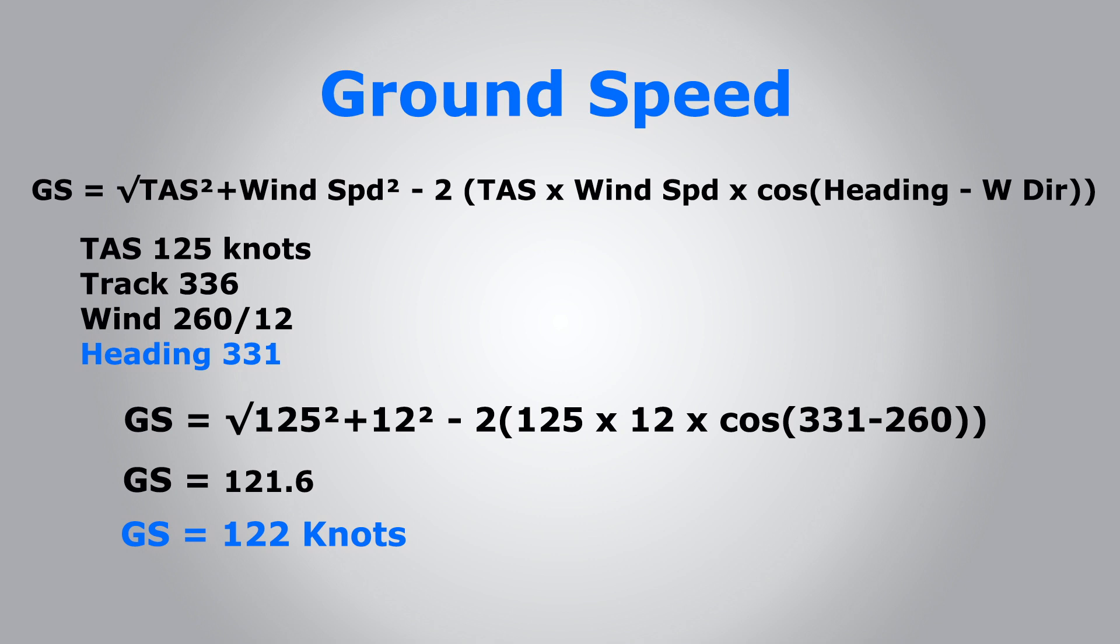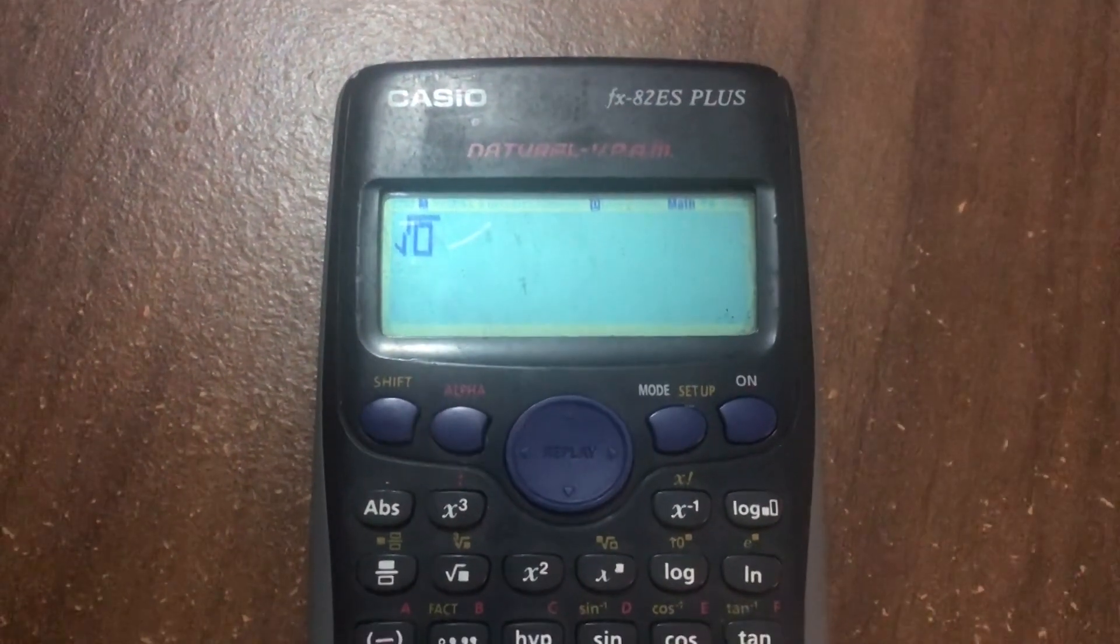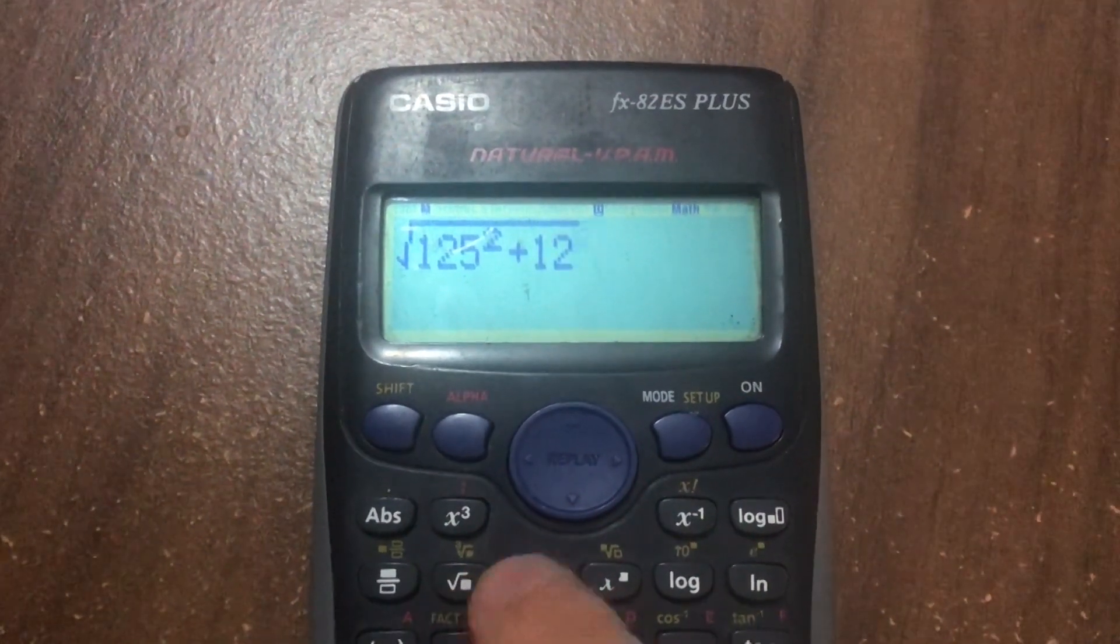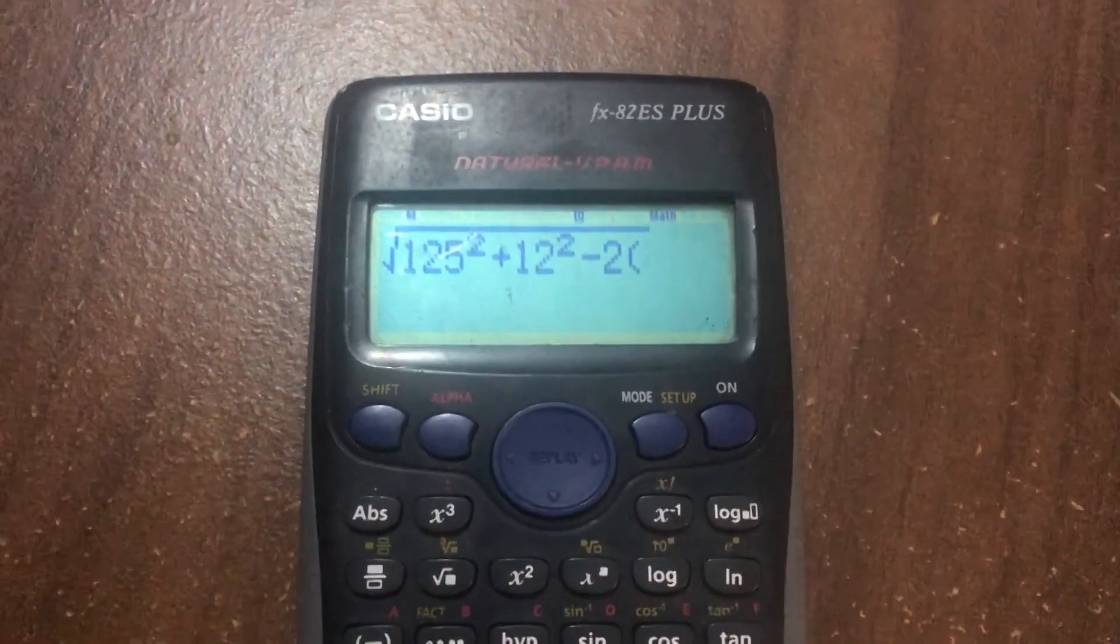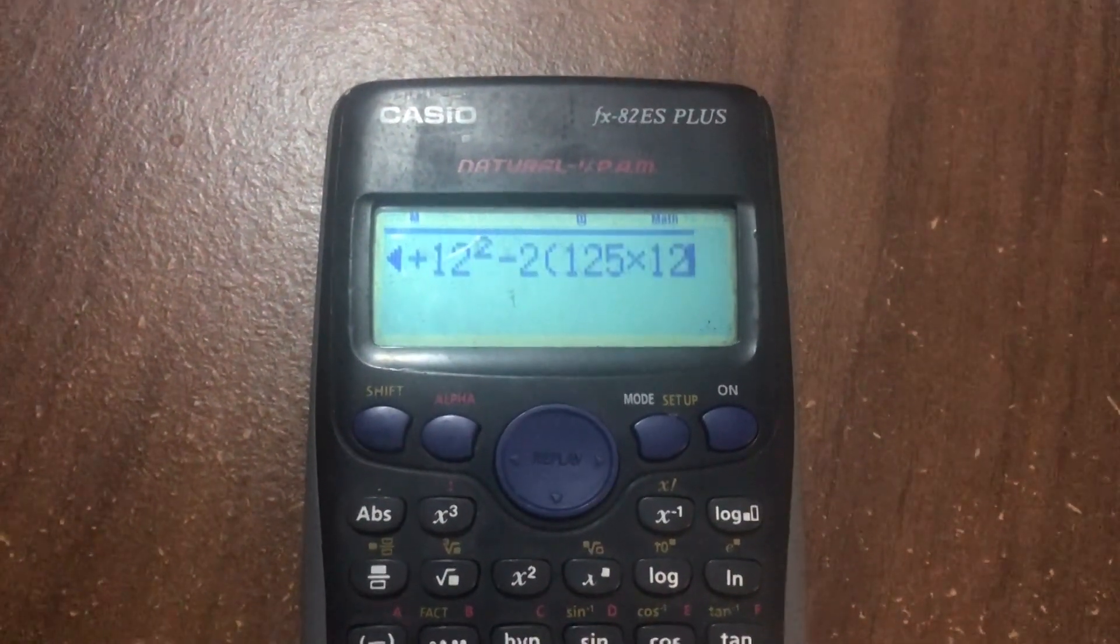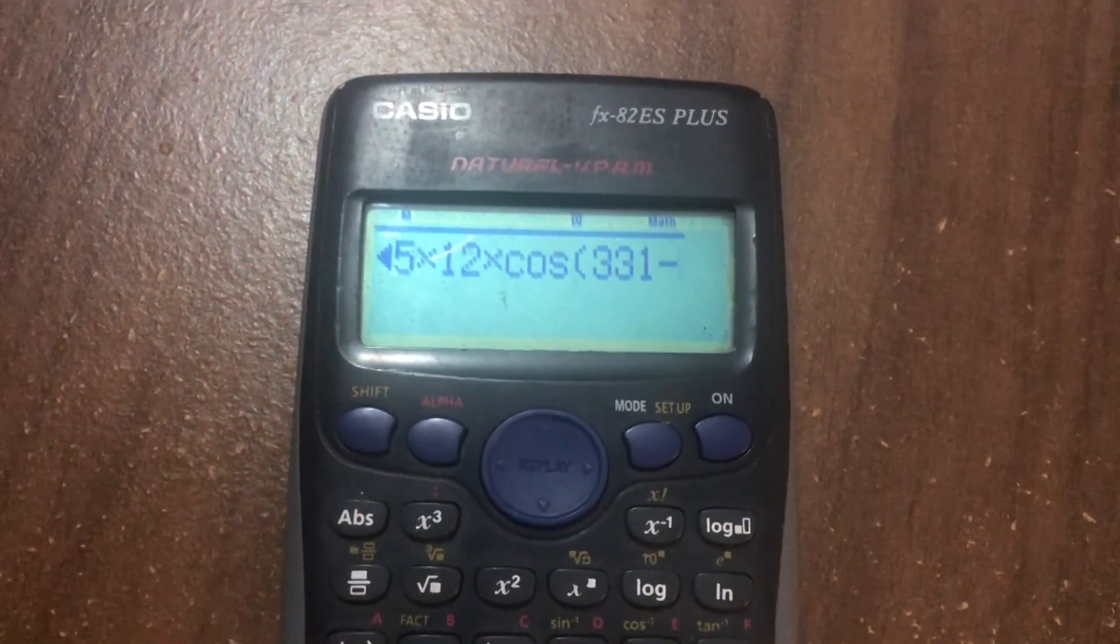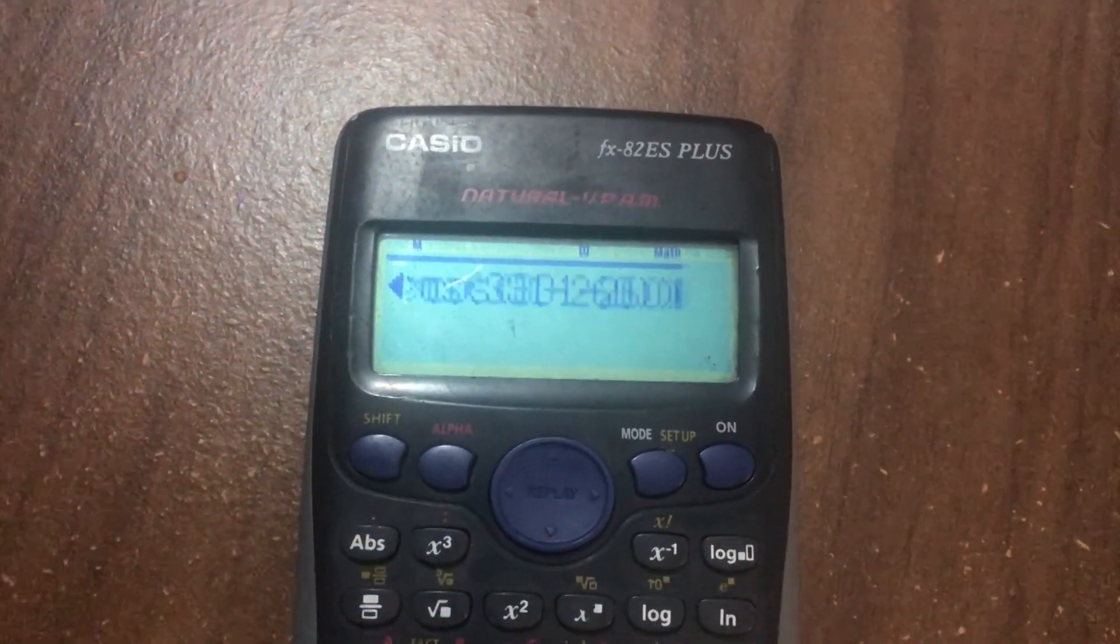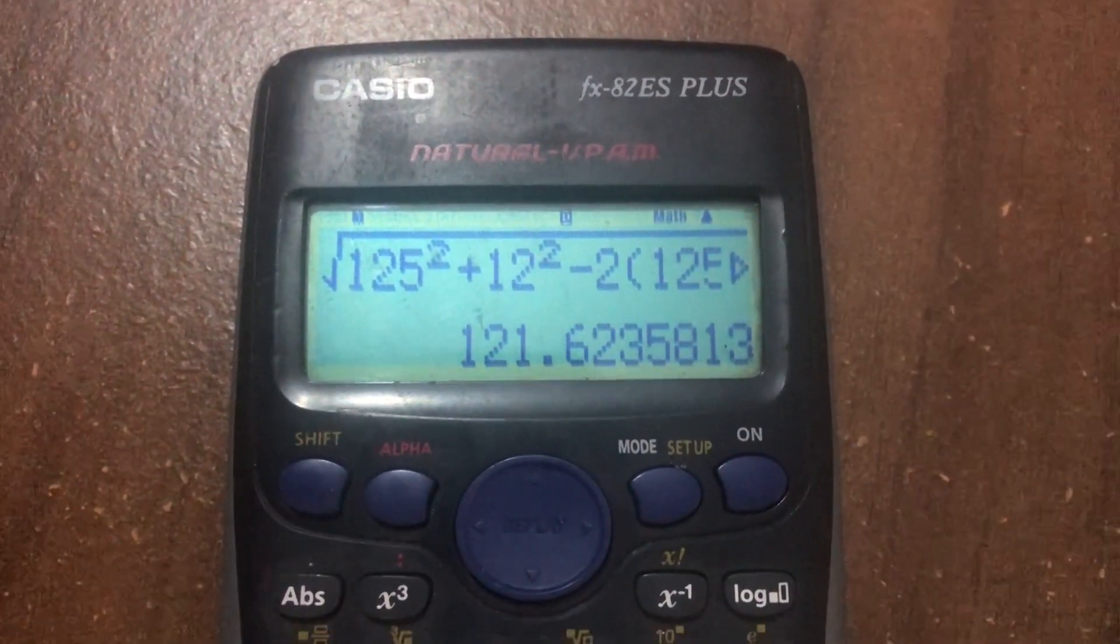And this is how we do it in the calculator. All right, this is the calculator, guys. So first the square root, and then we have 125 squared plus 12 squared minus 2, and then we open a parenthesis, times the TAS 125 times wind speed 12 times the cosine of the heading 331 minus wind direction 260. And we close the parenthesis twice, and this is what we get: 121.6, so it's roughly 122 knots ground speed.